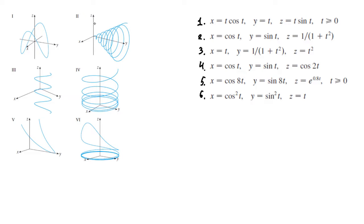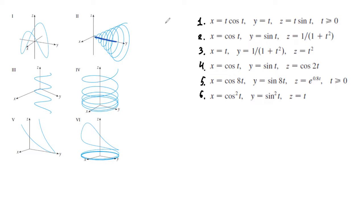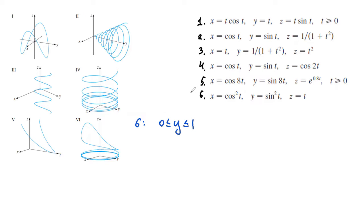Let's first try to match this first graph. I can see on these graphs that my y variable is unbounded — it starts at 0 and goes to plus infinity. But if I take equation number 6, I can see that my y is going to be bounded between 0 and 1, since y equals sin squared t, and sin t is between negative 1 and 1, so sin squared t is between 0 and 1. That's why equation 6 for sure doesn't work.